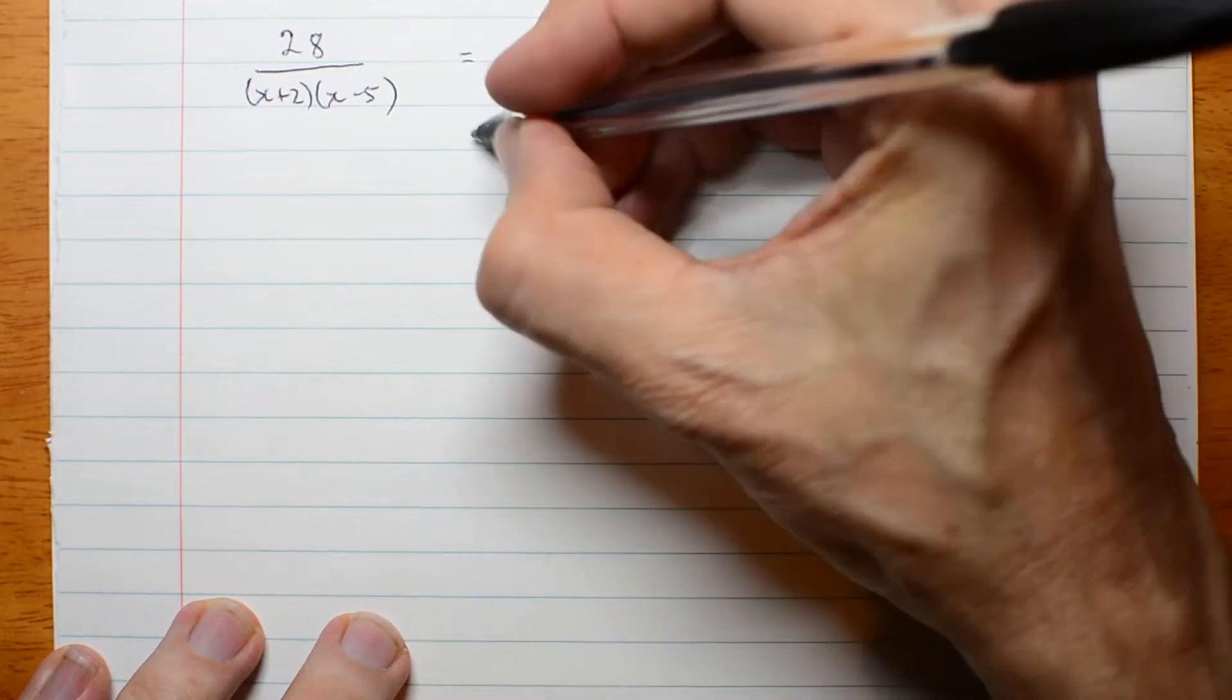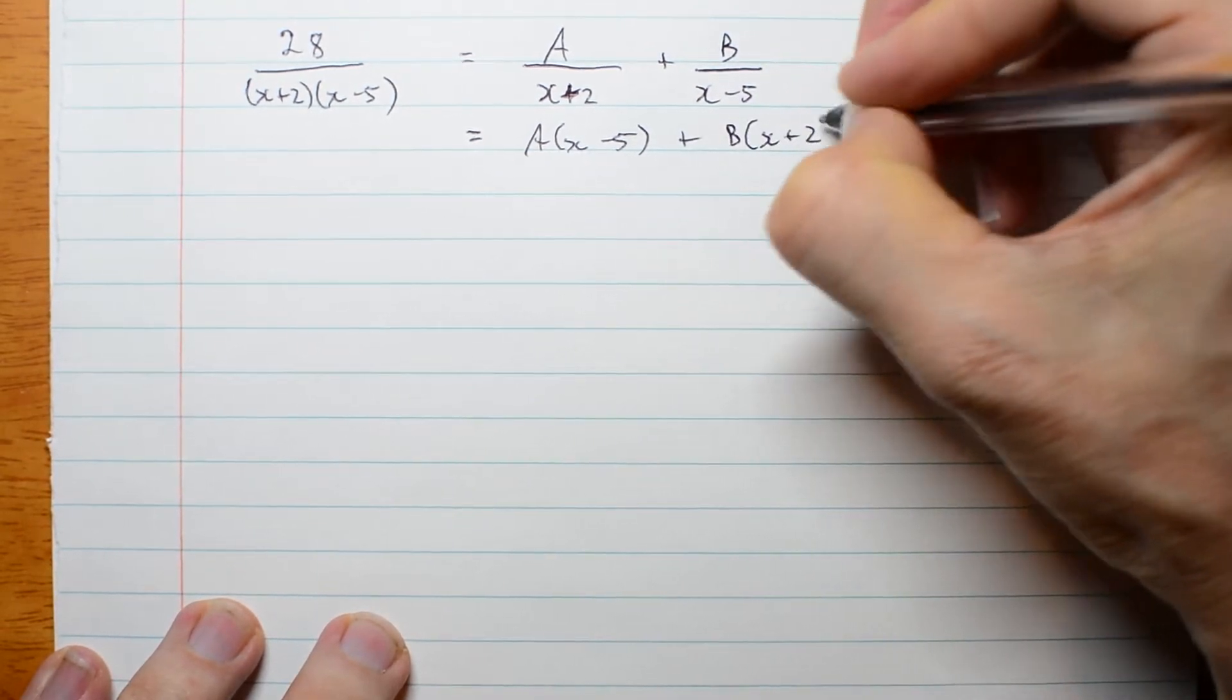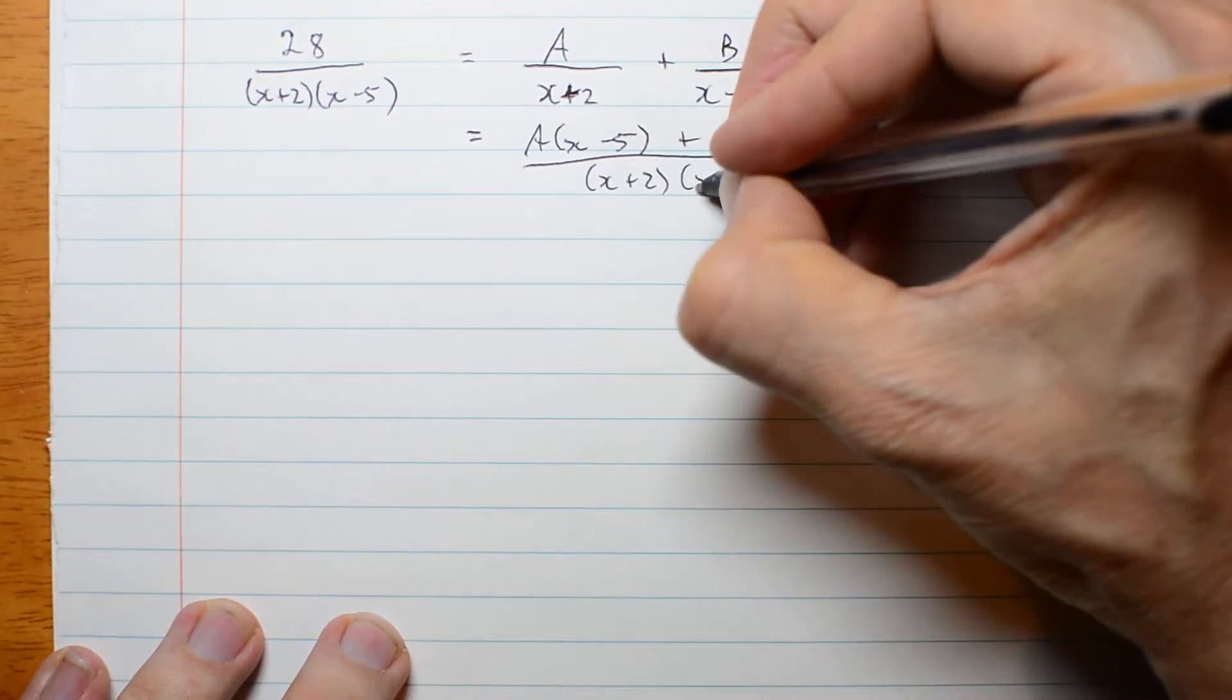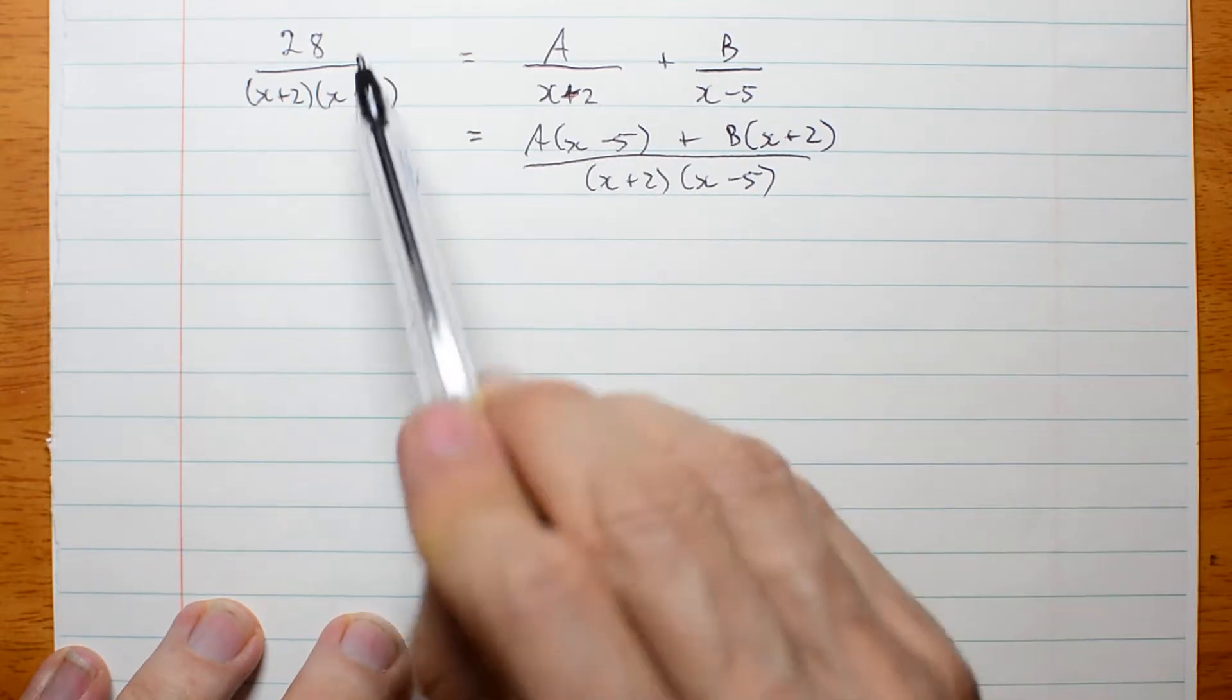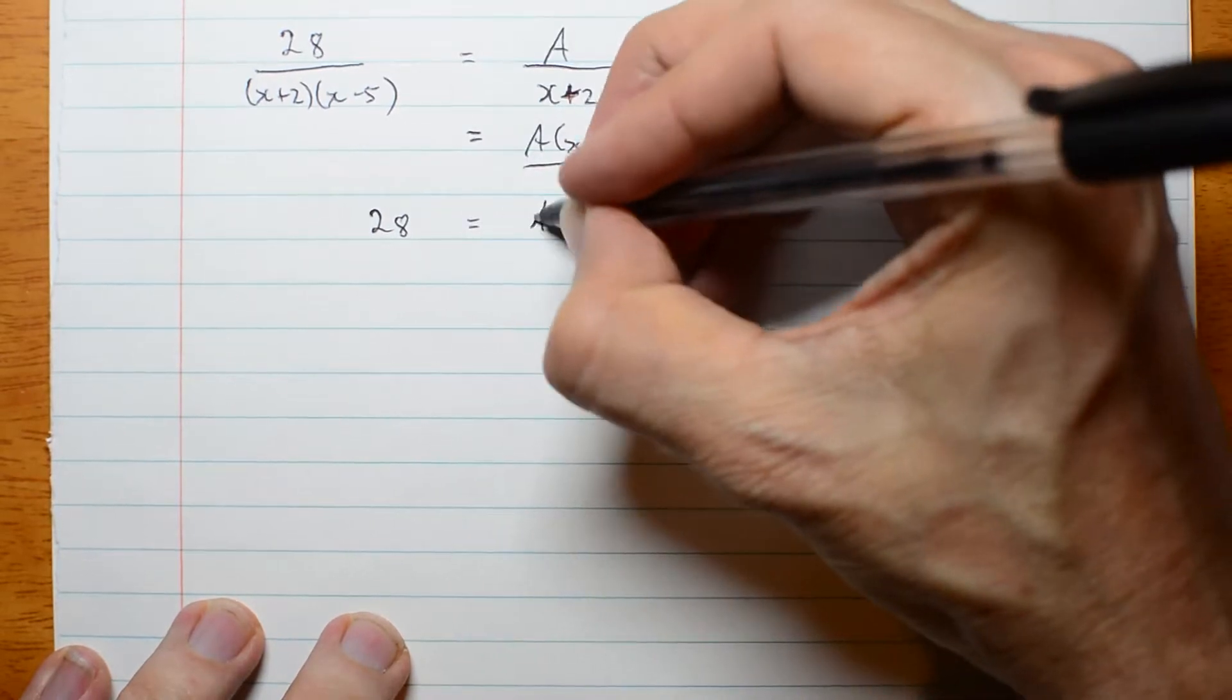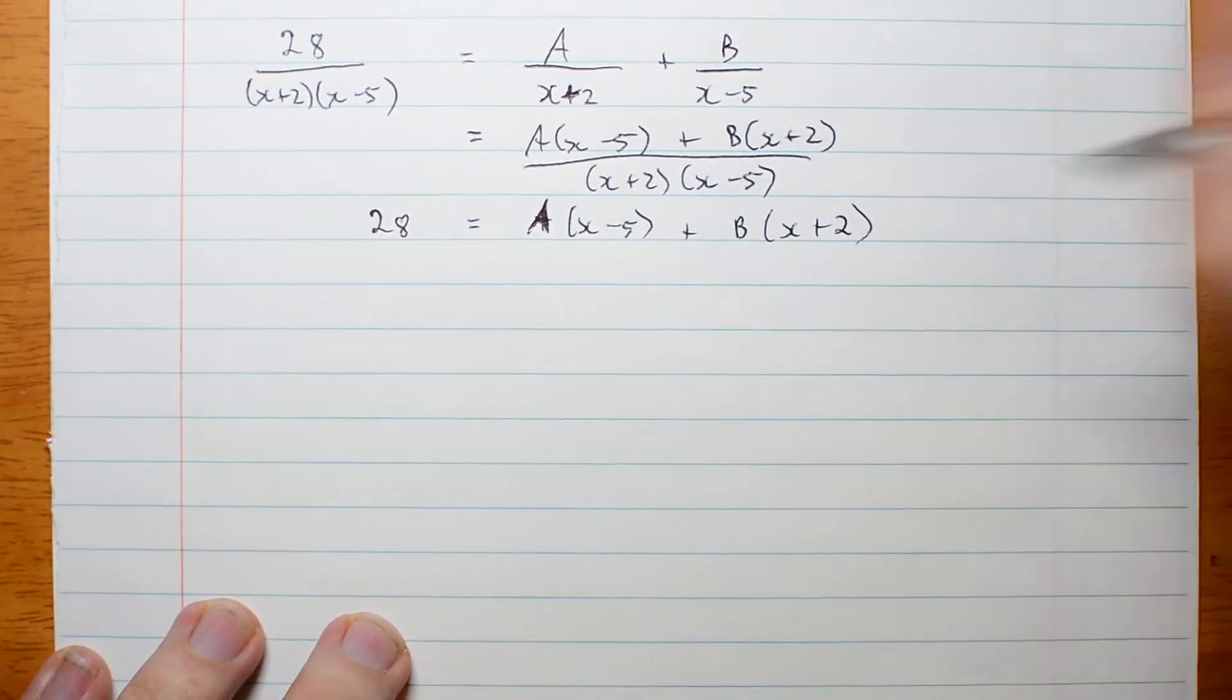Well, let's do the fraction addition: a x minus 5 plus b x plus 2, all over x plus 2, x minus 5. Now I have the same denominator, so my numerators must be equal. 28 is a x minus 5 plus b x plus 2.